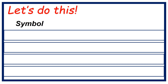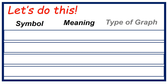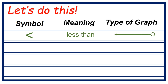First, let's study the symbol, its meaning, and the type of graph. We have the first symbol — its meaning is less than. Type of graph: open circle, arrow going to the left. Look at the symbol — it's like the head of an arrow, so that will be your clue.